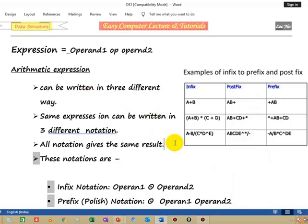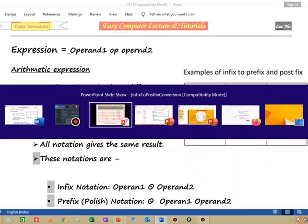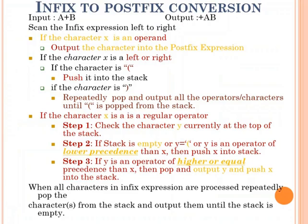Let us go to the algorithm. In case of infix to postfix conversion, first, what is the input? Input is a plus b and output will be plus a b. First of all, we have to scan the infix expression left to right. That is, if x is an operand, then we will push at or output the character at postfix expression.